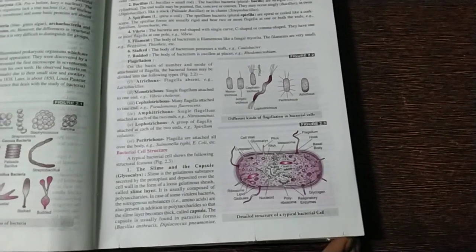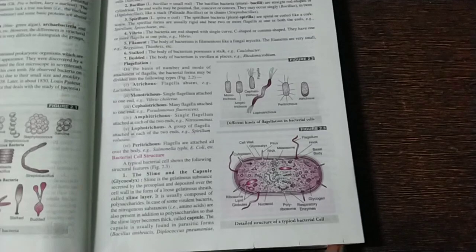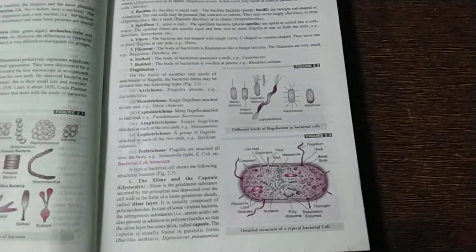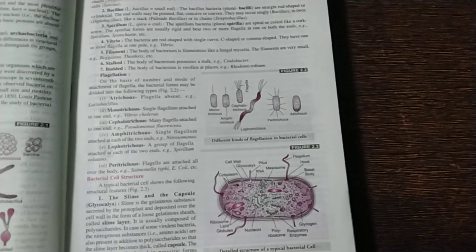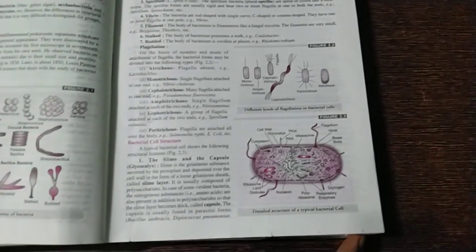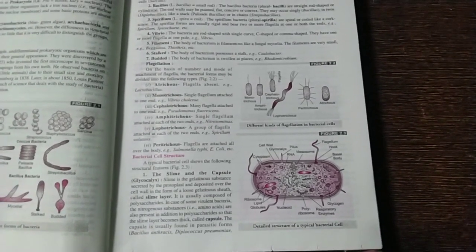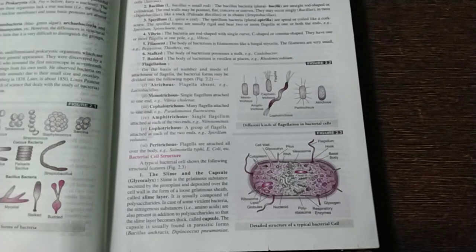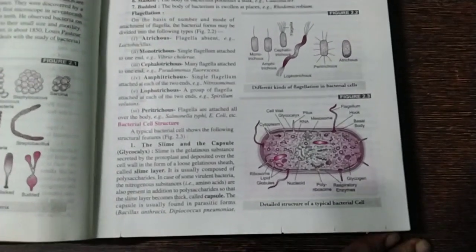And also, you can see bacterial cell structure is given. This diagram is not in NCERT. You can find in this book it is having, and different kind of flagellation in bacterial cells is also there. Like in questions, it used to come that draw bacterial cell and define its structure. So yeah, it's given very nicely in this, the slime and the capsule.